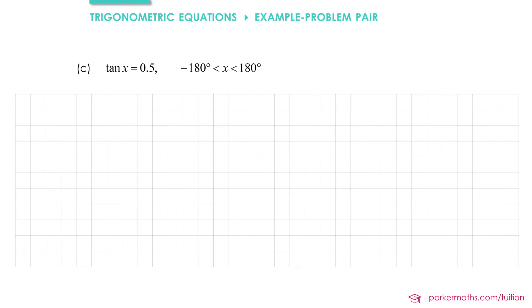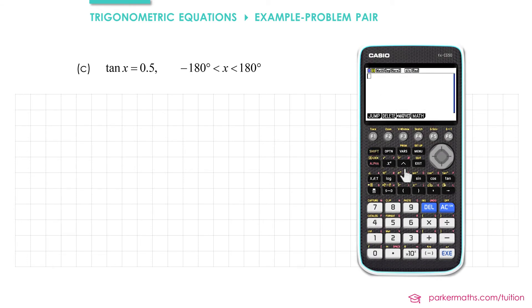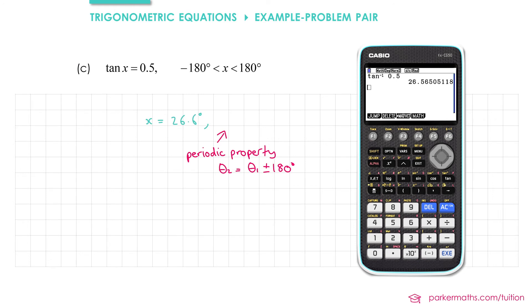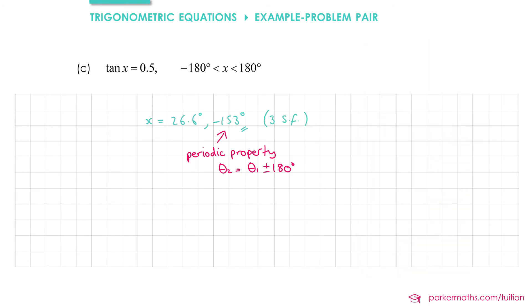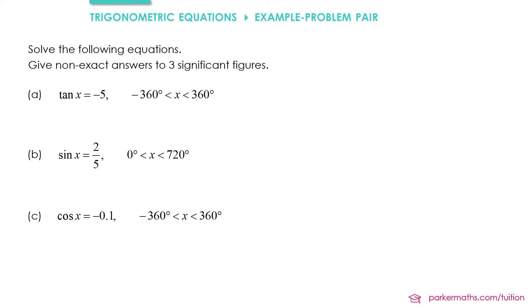In part c we're solving tan x equals 0.5 where x is greater than negative 180 but less than 180 degrees. First of all we'll do inverse tan of 0.5 on our calculator, which gives us x equals 26.6 to three significant figures. To get our second solution we use the periodic property for tan, which says we can take our first solution and add or subtract multiples of 180 degrees. Adding 180 degrees would be outside the region, but subtracting 180 degrees gives us negative 153 to three significant figures.